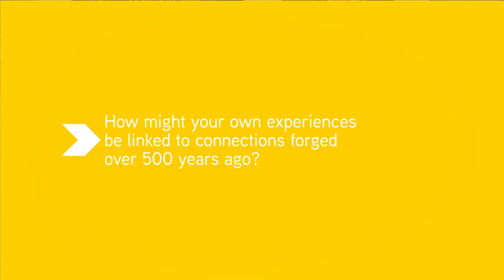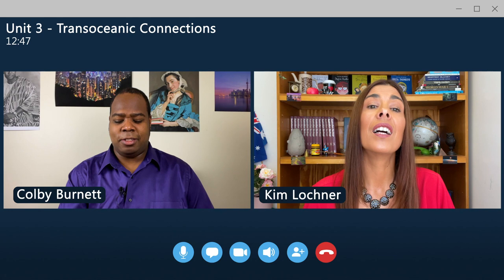In this unit, you'll explore transformations that have lasting legacies in our world, like religious syncretism, mass migrations, the birth of capitalism, and the institution of slavery. How might your own experiences be linked to connections forged over 500 years ago? So if plants hadn't moved along those trans-oceanic connections, my continent would be the only one farming corn. Why are you always in these bits with something corny? Wait, but that wasn't... Now it is.